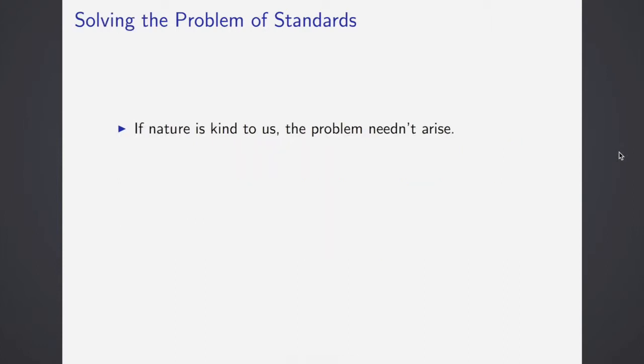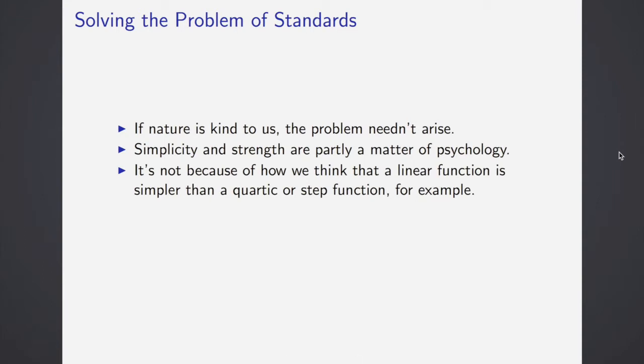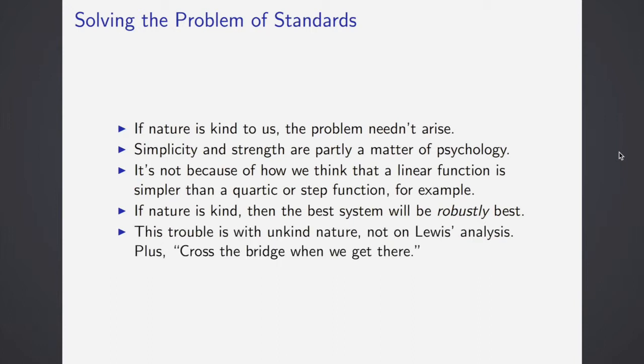He submits that simplicity and strength are going to be partly a matter of psychology, but also it's not because of how we think that, for example, a linear function is simpler than a quartic function or a step function. If nature has been kind, then the best system is going to be robustly best, Lewis thinks. The trouble is with unkind nature, not Lewis's analysis. And Lewis says we should cross the bridge when we get there.